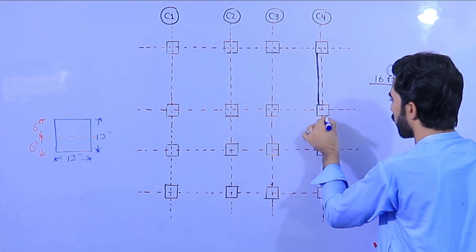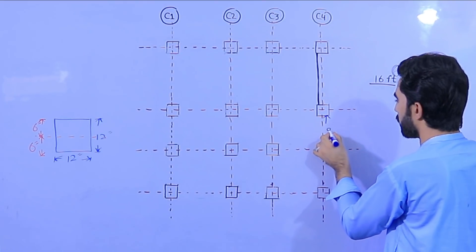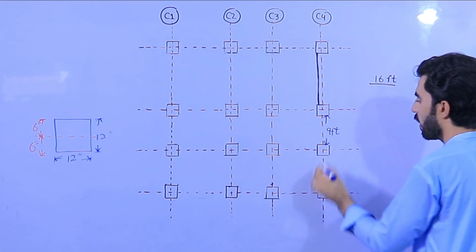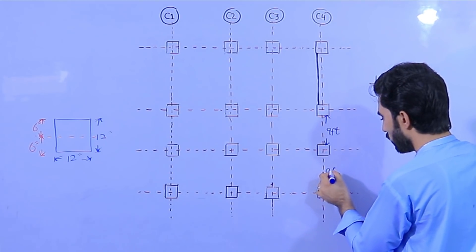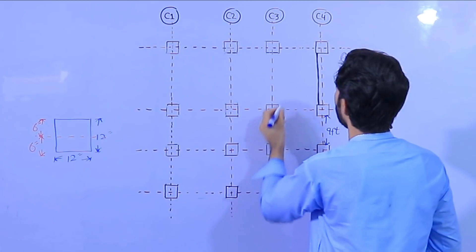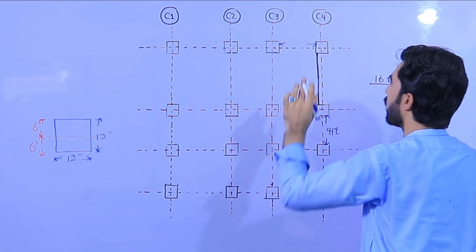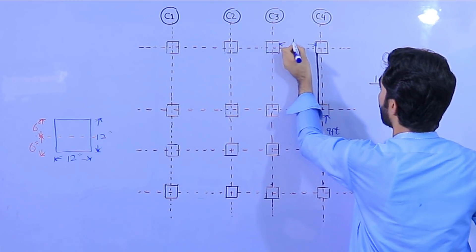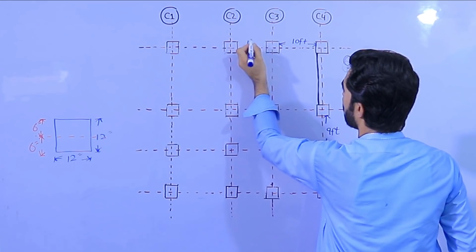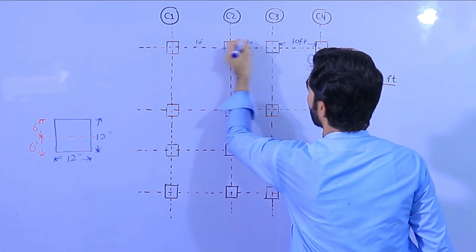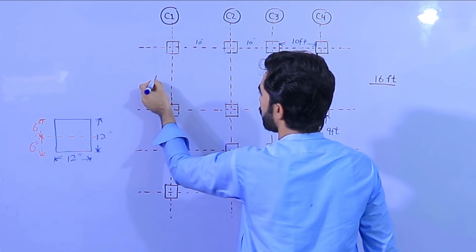For example, we also have this dimension — internal 9 feet, and this one also 9 feet. Here the clear length between two columns is, for example, 10 feet. This is also 10 feet, this is also 10 feet, and this is also 10 feet. The same way, we have 16 feet here.